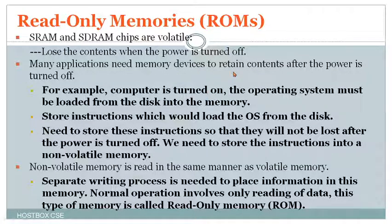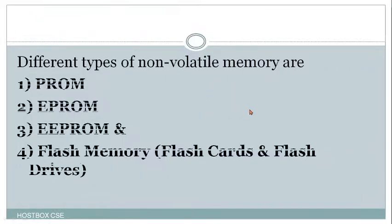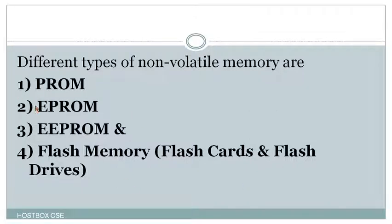Data is written into a ROM when it is manufactured. Once the data is written, it cannot be changed — we can't alter the data. There are different types of non-volatile memories: PROM, EPROM, EEPROM, and flash memory.